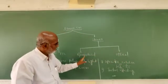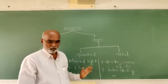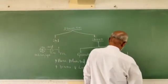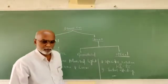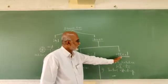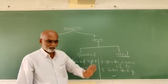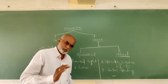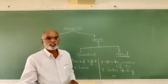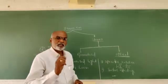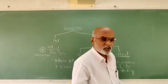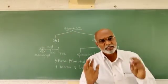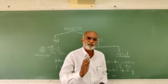Let us discuss both of these two one by one in detail. First, let me select optical isomerism. Optical isomers are compounds with the same molecular formula, same chemical composition, same structural formula, and almost the same physical and chemical properties, but they differ in the direction of rotating the plane polarised light.